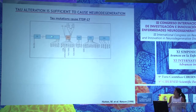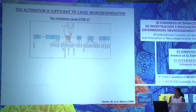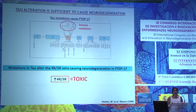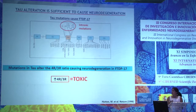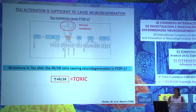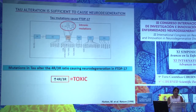Along the exons encoding the microtubule binding domain there are several point mutations, but some families also have intronic mutations. In these families, a disbalance in the ratio between 4R and 3R tau has been described, with an increase in the levels of 4R tau isoform. This alone is sufficient to cause neurodegeneration, so we can say that an increased 4R/3R ratio is toxic.